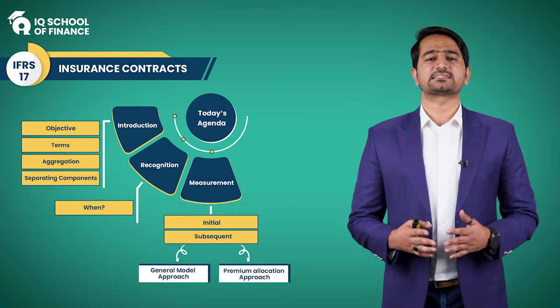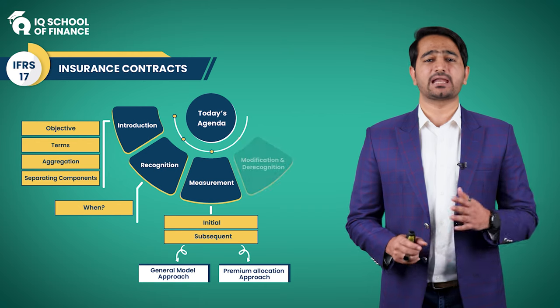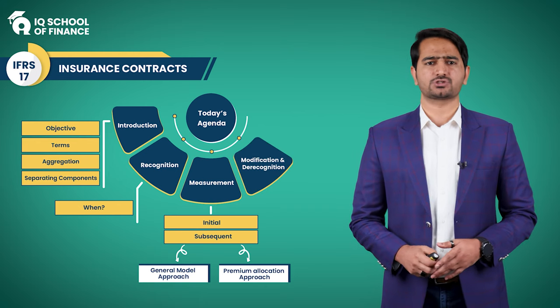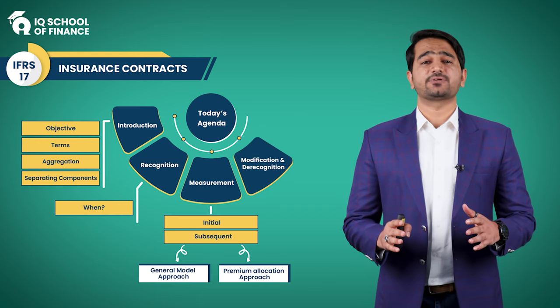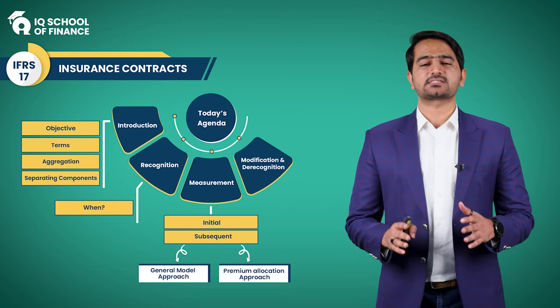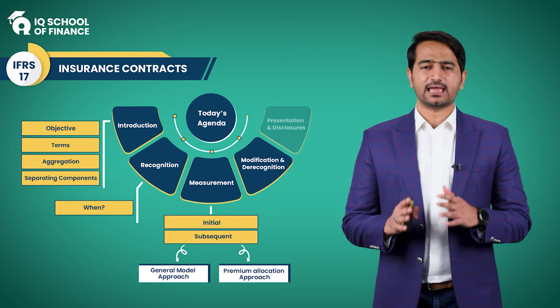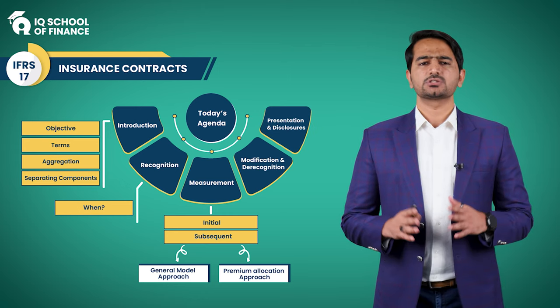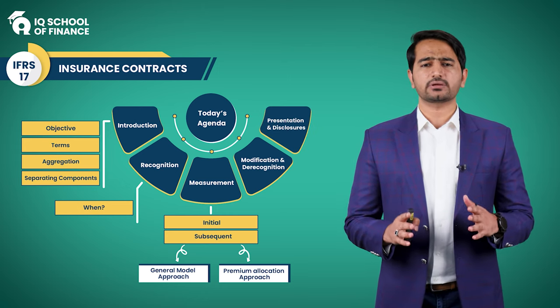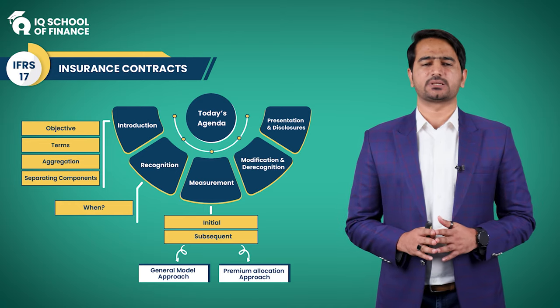IFRS 17 also talks about modification and de-recognition of insurance contracts, and finally covers how insurance contracts are presented and disclosed in the financial statements. That's a quick look at what is included in IFRS 17.